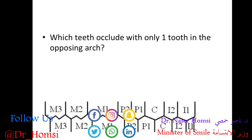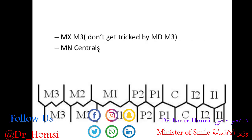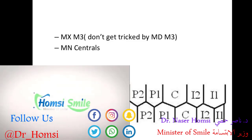Here's a question: which teeth occlude with only one tooth in the opposing arch? Looking at the picket fence, the answer is the maxillary third molar — it's only occluding with one opposing tooth — and the mandibular centrals are only occluding with one other tooth. Be careful on the exam because one of the options is going to be the mandibular third molar, but looking at the diagram, the mandibular third molar is actually occluding with two teeth on the upper. Don't get tricked by that one.